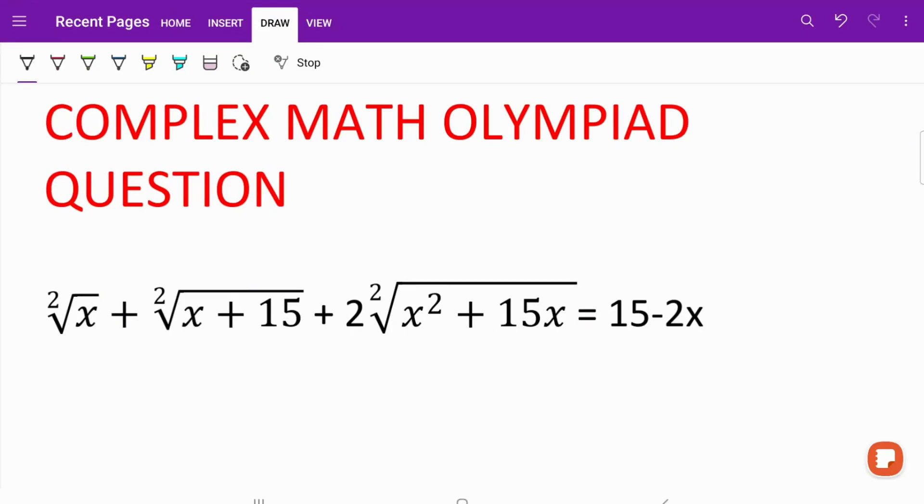In this equation, we are given square root of x plus square root of x plus 15 plus 2 times square root of x squared plus 15x is equal to 15 minus 2x. And obviously, we are going to solve for the value of x.